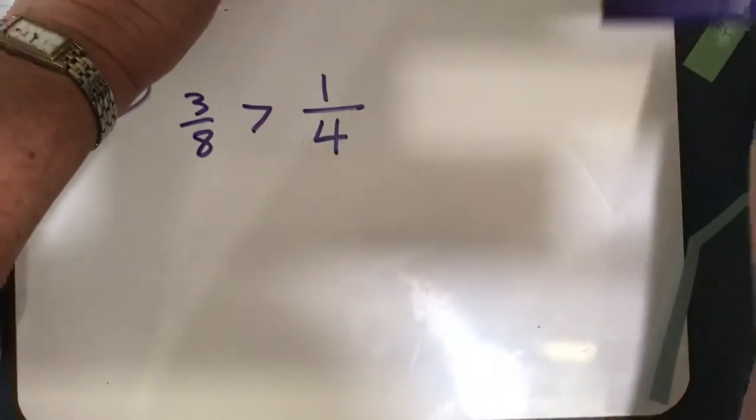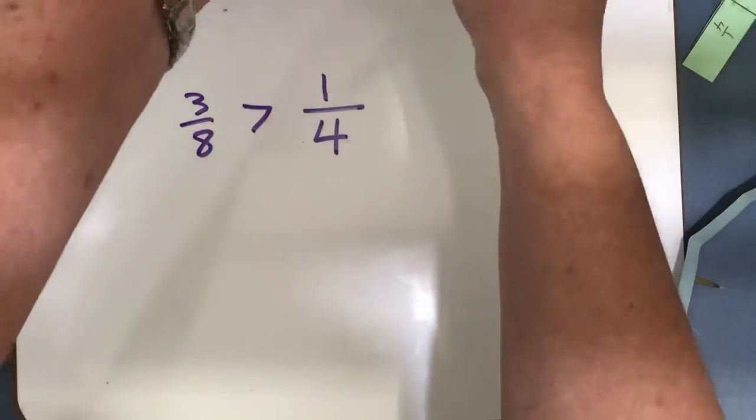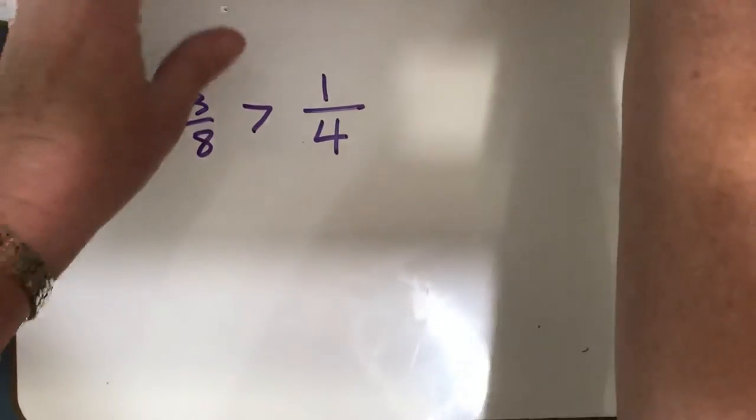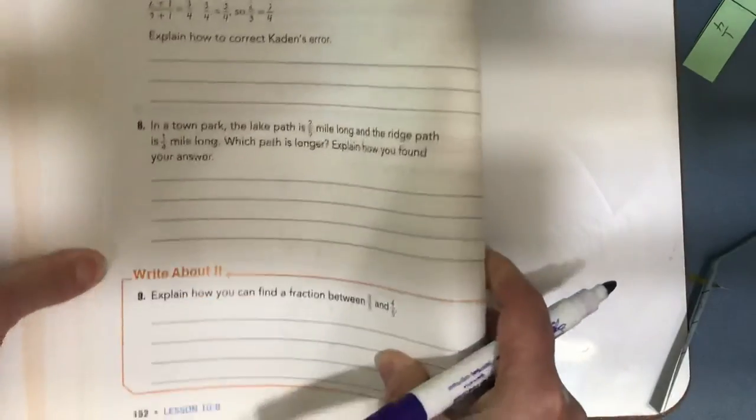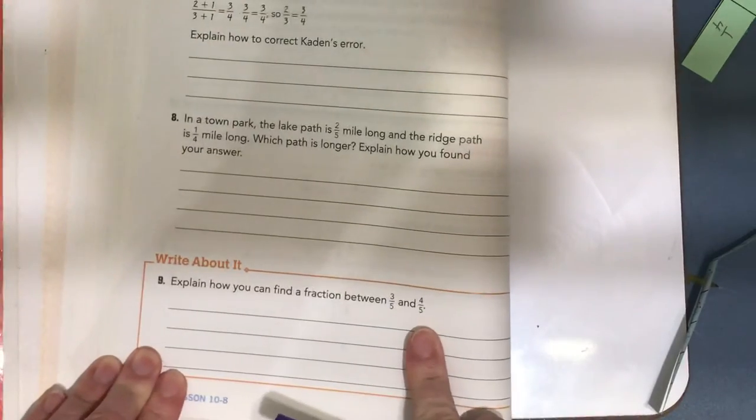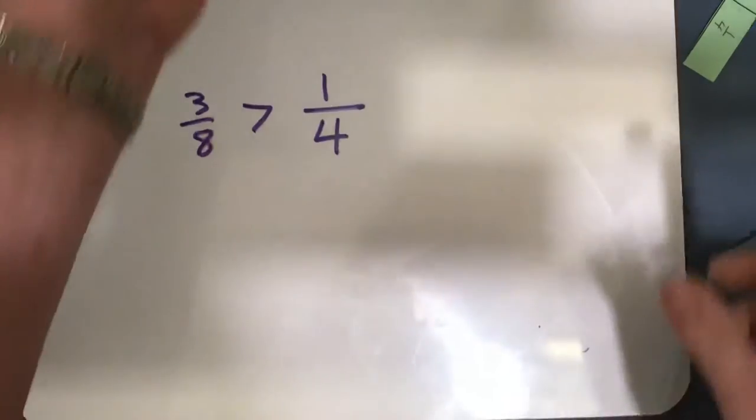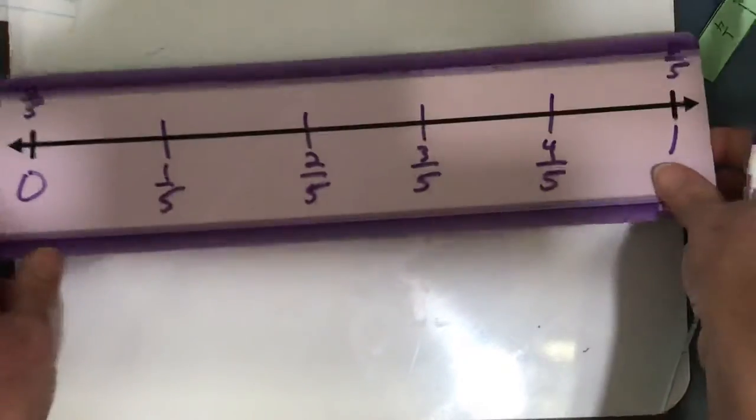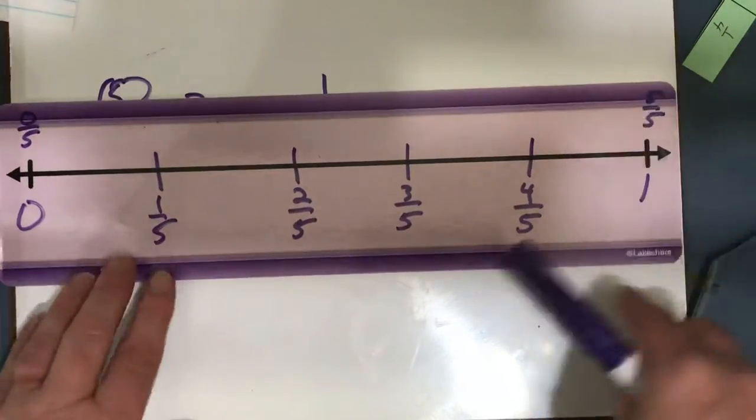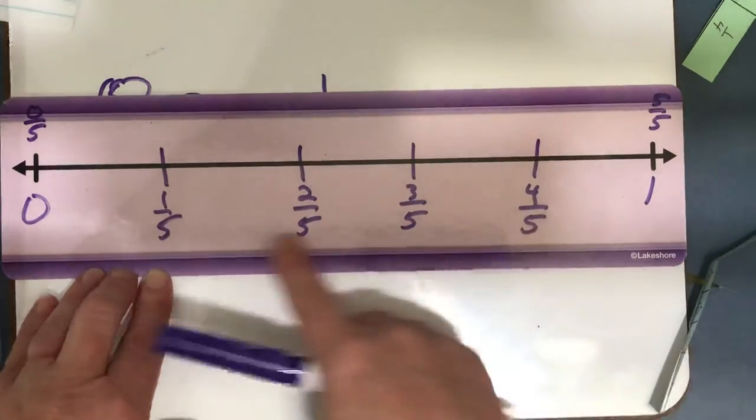I want you to look on 152, because this is the page that you're going to do, but let's look down at number 9. Number 9 says, explain how you can find a fraction between 3 fifths and 4 fifths.